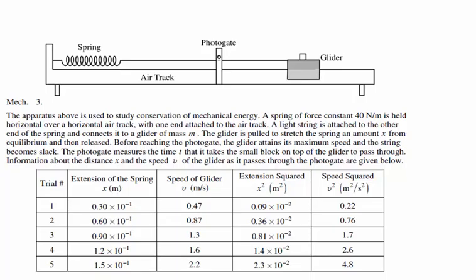This AP free response question looks at a glider on an air track connected to a spring. The spring is stretched out, then the glider is released, converting spring potential energy into kinetic energy. The glider passes through a photogate which records its speed — using the width of a small flag on top of the glider and the time for that flag to pass through the photogate to estimate instantaneous velocity. This is a lab-based question where you analyze given data.